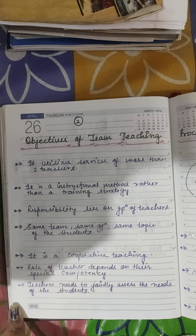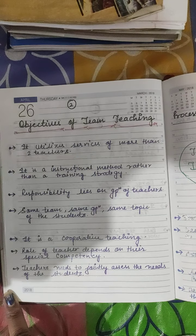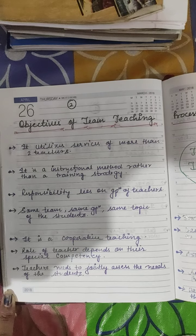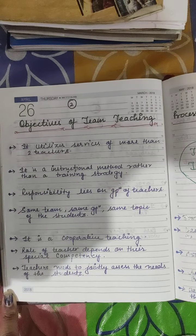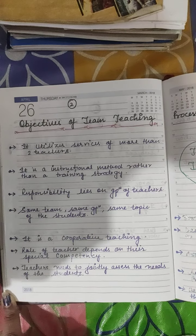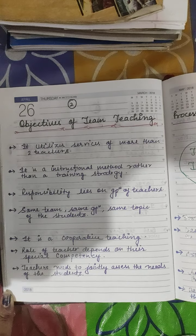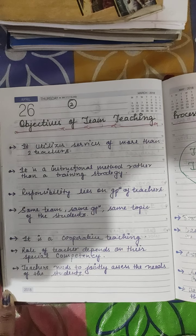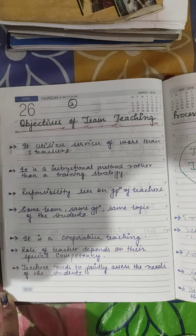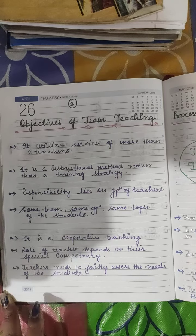The same class gives the same presentation on the same topic. It is cooperative teaching, where teachers cooperate with each other. The role of each teacher depends on their special competency — for example, one teacher may be very good in explanation, one in theory, and one in practical learning. Teachers can choose their field according to their interests and abilities. Teachers also need to jointly assess the needs of the students.